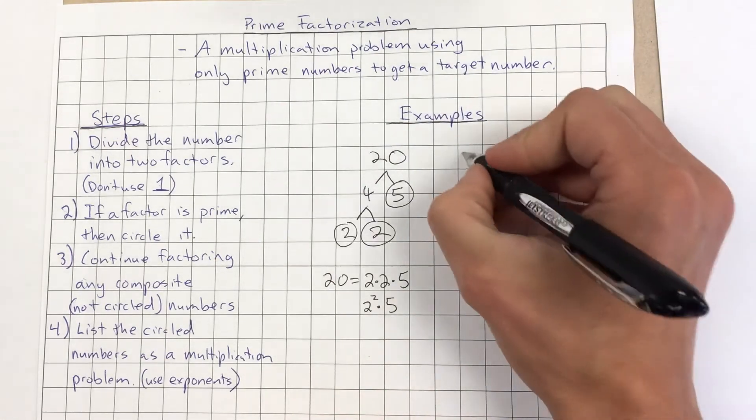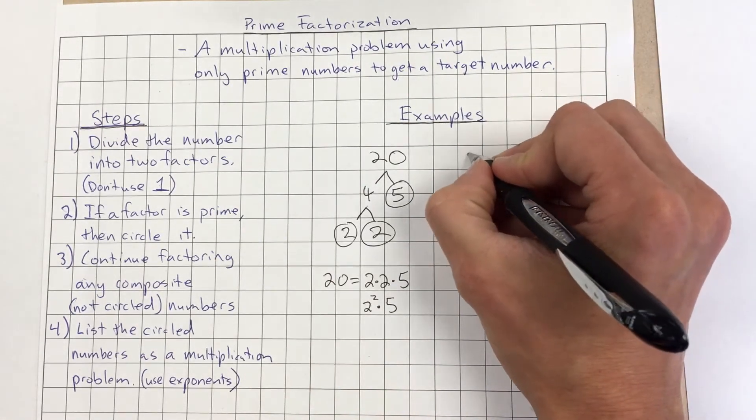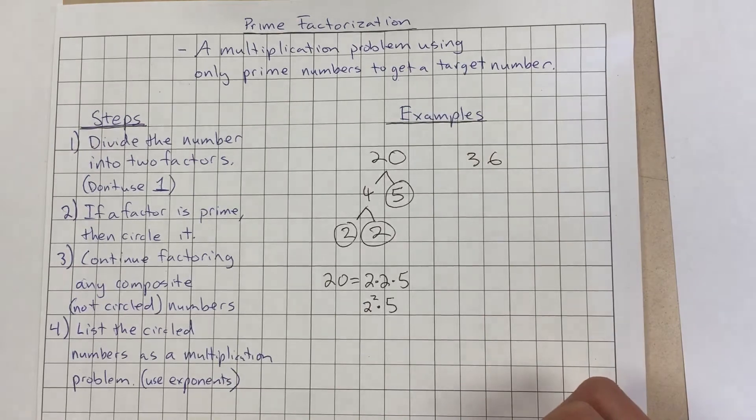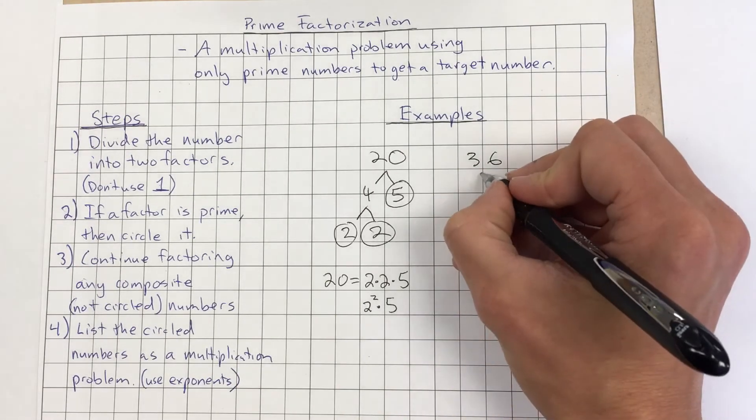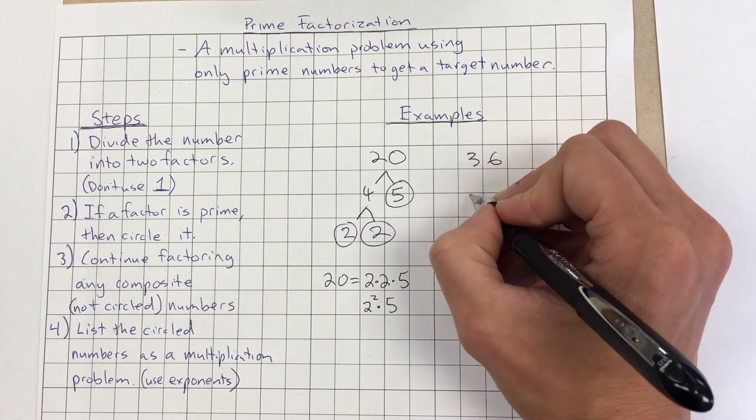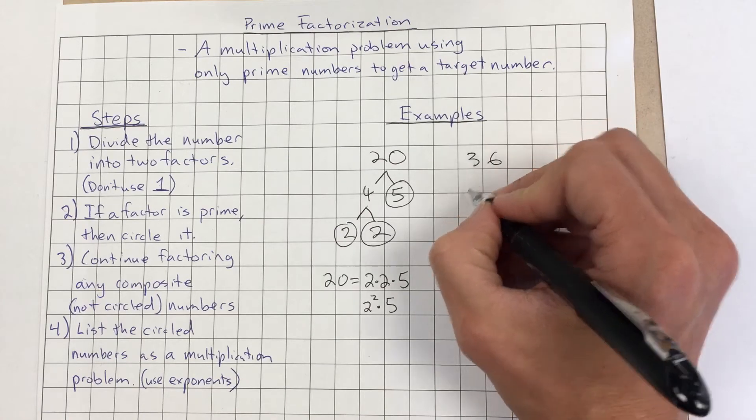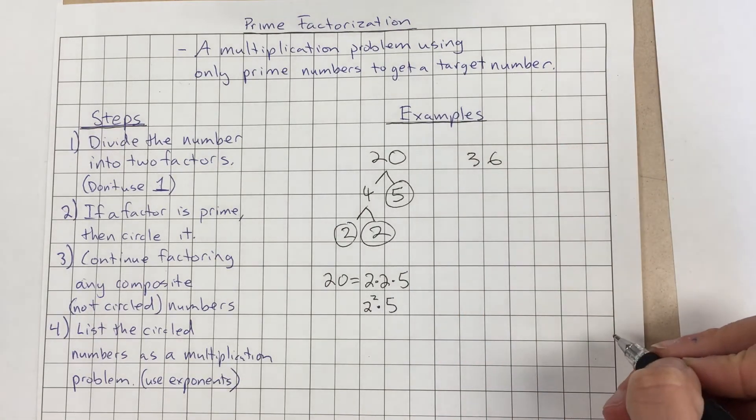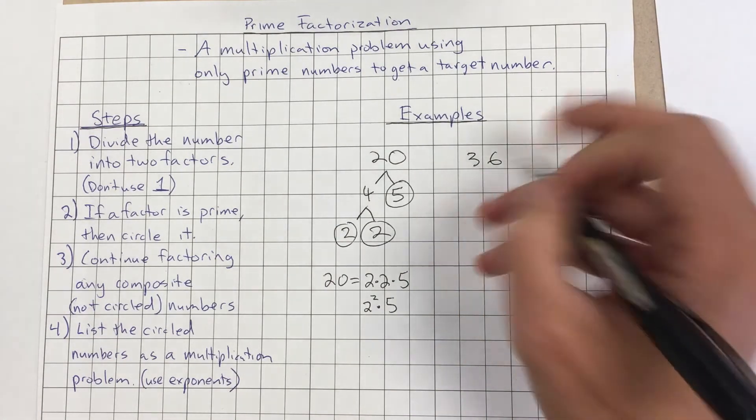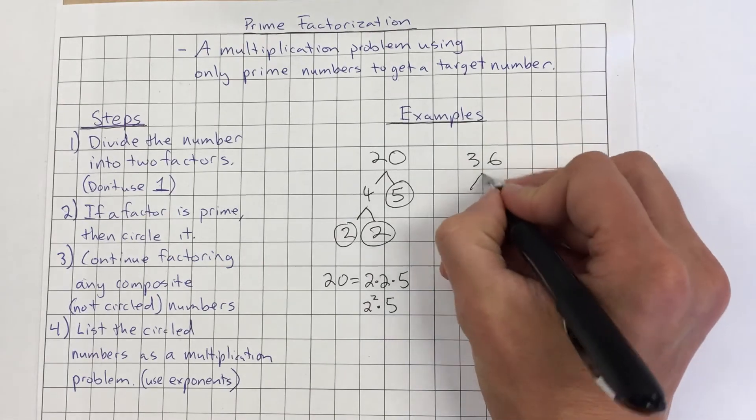Give you another example. Let's say we had the number 36. We want to split it up into two numbers. We could split it up into 18 and 2. We could split it up into 9 and 4. Whatever numbers we use, actually, we're always going to end up with the same answer. So let's do 18 and 2.